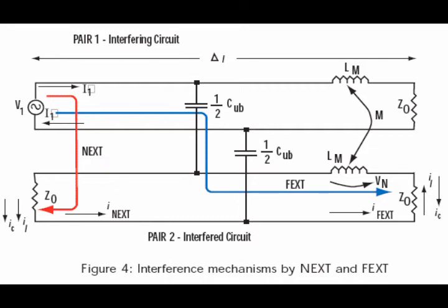Since the capacitively coupled energy at the near end of the receptor is the same polarity as the inductive energy, the two pulses add together. Hence the backward Crosstalk is much larger per unit length of coupling than the forward Crosstalk, which consists of the difference between the inductive and capacitive energy.